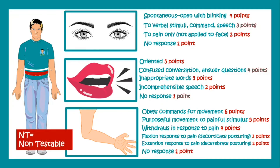If any of these parameters are non-testable, then we write NT (non-testable) instead of assigning any points.